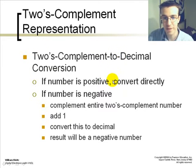If a number is positive, convert directly. However, if the number is negative, complement the entire two's complement number. Add 1, then convert to its decimal form. The result will be a negative number.